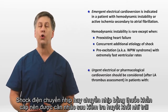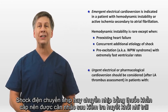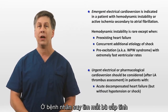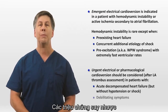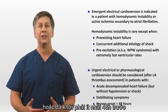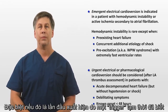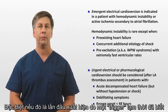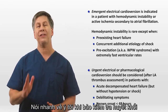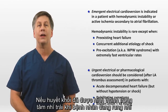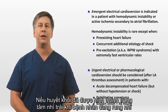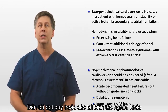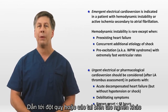Urgent electrical or pharmacological cardioversion should be considered after assessment for left atrial thrombus in patients with acute decompensated heart failure, debilitating symptoms, or a known onset less than 48 hours ago, particularly if it's a first occurrence due to a known temporary trigger. If a clot has formed in the left atrium while the patient has been in AFib, restoring sinus rhythm carries the risk of embolizing that thrombus, leading to a stroke or other embolic catastrophe.